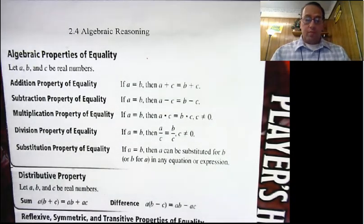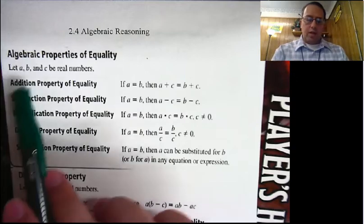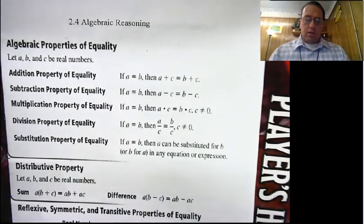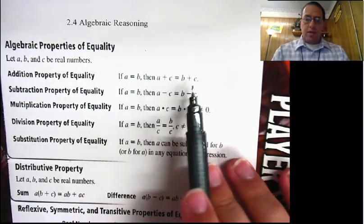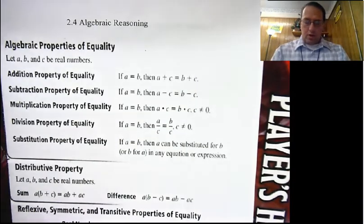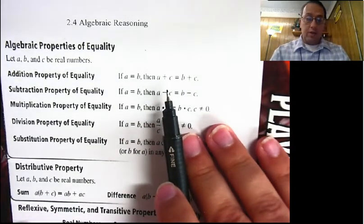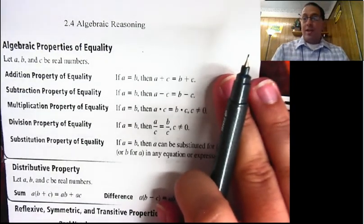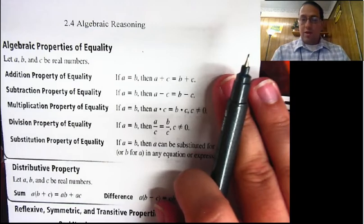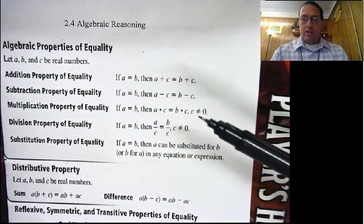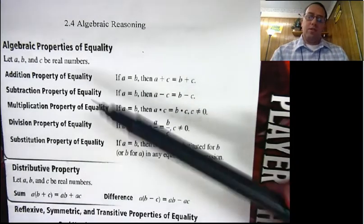Let's jump into it. Algebraic properties of equality first. We want a, b, and c to be real numbers. Addition property of equality: if a equals b, then a plus c equals b plus c. So if you have an equation, you can add something to both sides and the equation is still equal. For example, if x minus 3 equals 5, you can add 3 to both sides. We've been doing this for years — this is just the property that says we can do it.